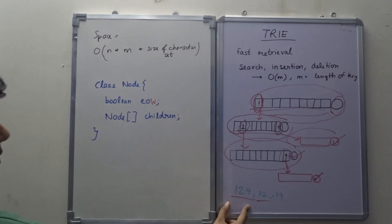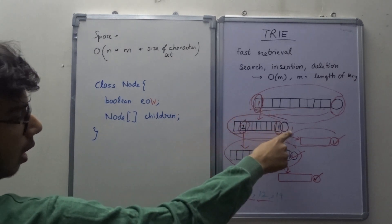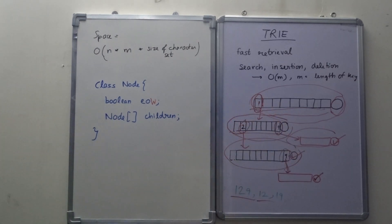Because for inserting 129, it only took me 3 steps, for insertion of 12 it took only 2 steps, and for insertion of 19 it took only 2 steps. So insertion is taking place in big O(m) time.